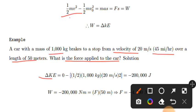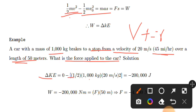The change in kinetic energy is: half of mv squared minus half of mv-naught squared. The final velocity is zero since the car brakes to a stop. So the final velocity is zero, giving us zero minus half of mv squared. The final velocity is zero.